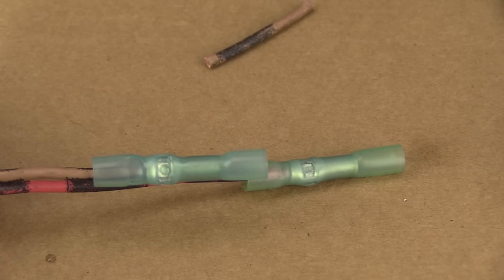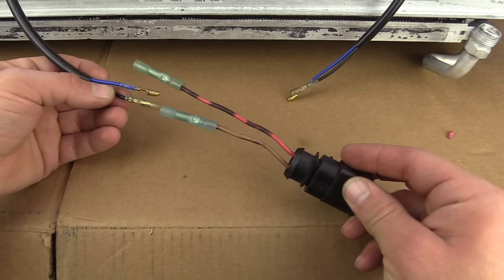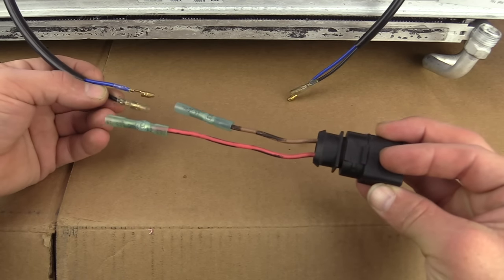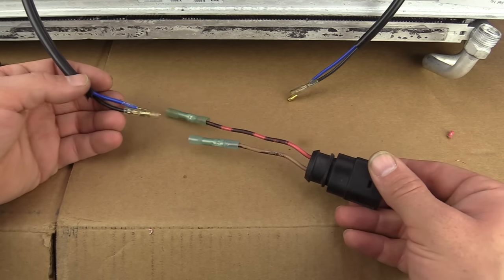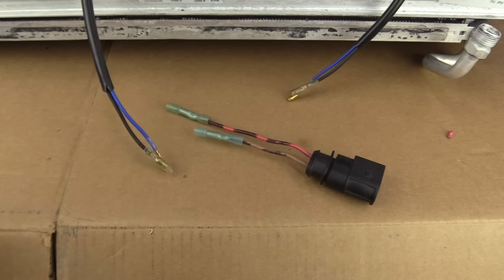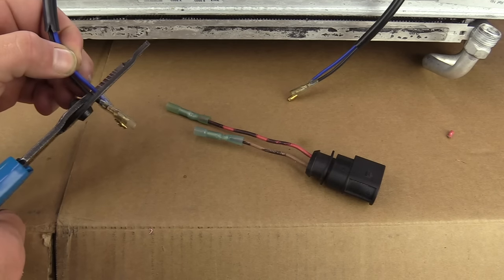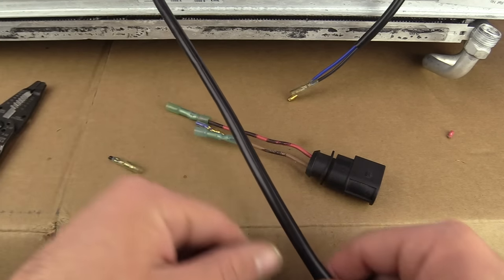We'll take our other crimp connector, put it on, double check. I could cut it a little bit further back but I think that'll be good enough for me. Now it's time to attach this end to the fans. The important thing here is to make sure you get the polarity correct.